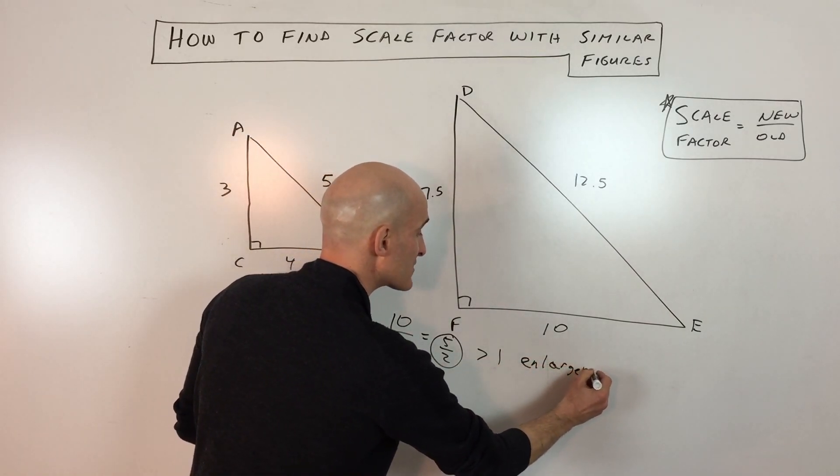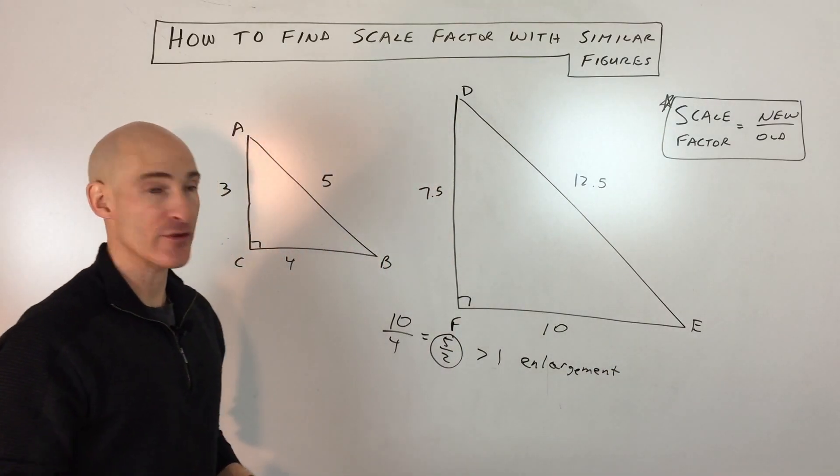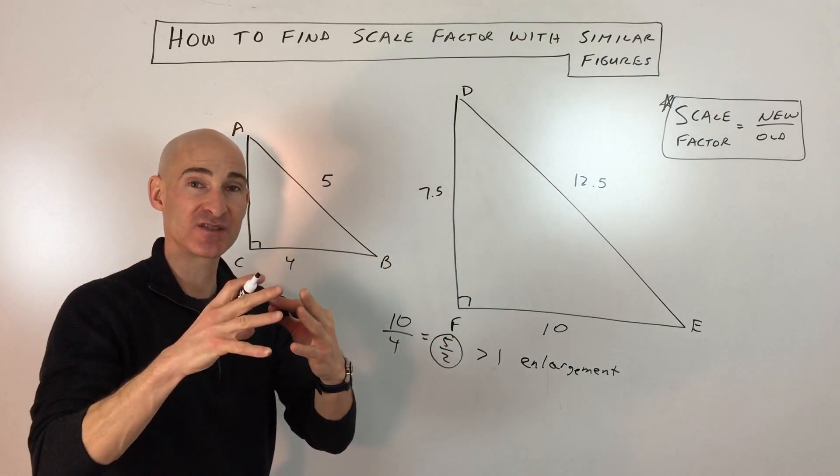Now, if the scale factor is less than 1, like a half or a third or something like that, then it's a reduction. It's getting smaller.